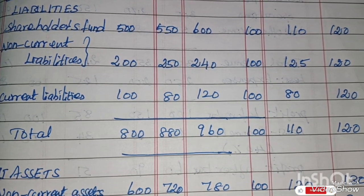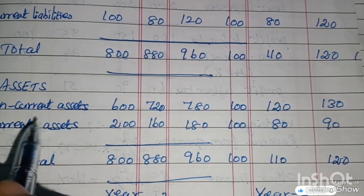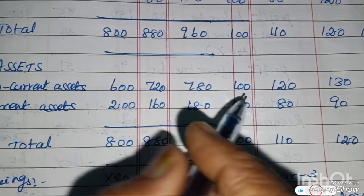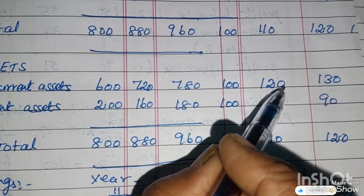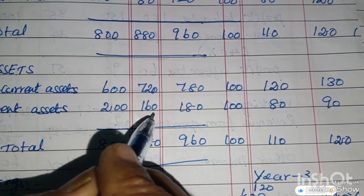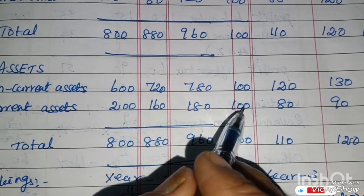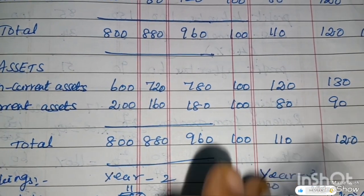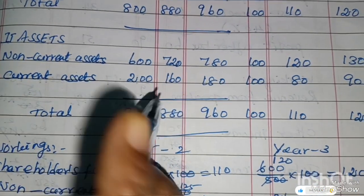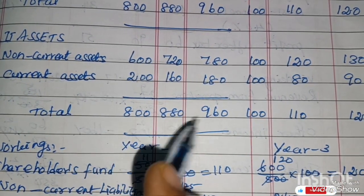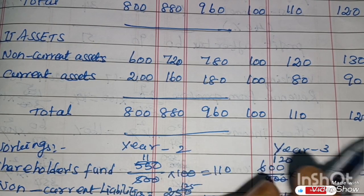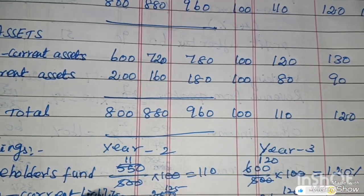Next — Assets section. Non-Current Assets — 600, 720, 780. Trend percentages: 100, 120, 130. Current Assets — 200, 160, 180. Trend percentage for Year 1 is 100. Total Assets — Year 1: 800, Year 2: 880, Year 3: 960. Trend percentages: 100, 110, 120. Workings — how to calculate.